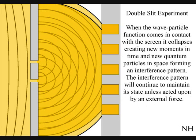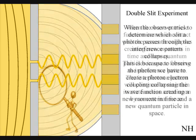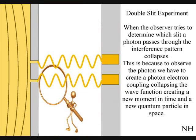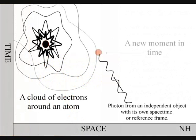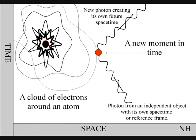When the observer tries to determine which slit a photon passes through, the interference pattern collapses. This is because to observe the photon we have to create a photon-electron coupling, collapsing the wave function and creating a new moment in time and a new quantum particle in space.